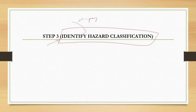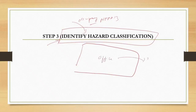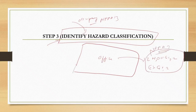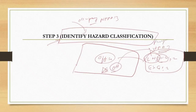Once we confirm sprinklers are required, we need to identify the occupancy hazard classification as per NFPA 13 — whether the building comes under light hazard, ordinary hazard group 1 or 2, or extra hazard group 1 or 2. If we select the wrong hazard classification — for example, our office comes under light hazard but we selected ordinary hazard — it will impact the fire pump capacity, pipe sizing, and affect the entire system.